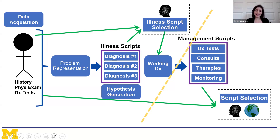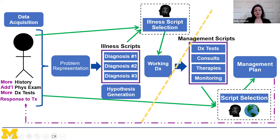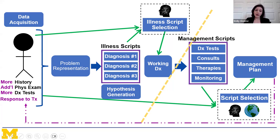The management script in the clinician's mind is compared to the clinical situation, but the clinician also has to account for the system, patient preferences, and the multidisciplinary team. From there, they develop a management plan. That plan may trigger additional history-taking, further physical exam maneuvers, more diagnostic tests, or monitoring the response to treatment—all feeding back into the diagnostic side and further refining the working diagnosis.